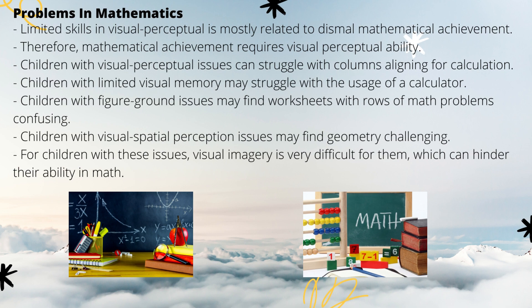Now coming to the problems in mathematics. Limited skills in visual perception are mostly related to poor mathematical achievement, even when controlling for verbal cognitive abilities. Therefore, mathematical achievement requires visual perceptual ability. Children with visual perceptual problems can struggle with aligning columns for calculations, and therefore answers are not accurate because of alignment issues, not calculation issues. Children with limited visual memory may struggle with the usage of a calculator and may also have issues with addition and subtraction, as both require multiple steps.